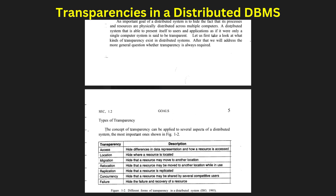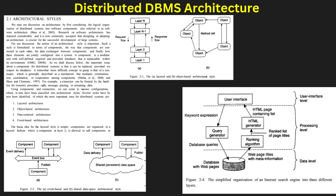These transparencies simplify user interaction with the system while enhancing fault tolerance, efficiency, and data consistency in a distributed environment. Now, distributed DBMS architecture defines the structure and organization of database components across multiple locations. It can be broadly classified into centralized, client-server, and peer-to-peer architectures.